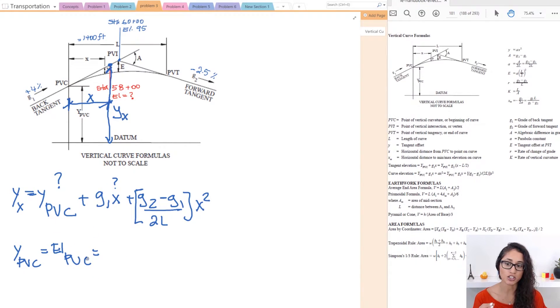So as we mentioned in the previous video the elevation at PVC is equal to the elevation at PVI minus G1 times L divided by 2. So this is half of this length. So let me write that down. So we have elevation at PVI minus G1 times L divided by 2.